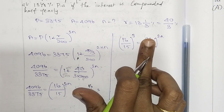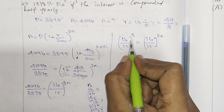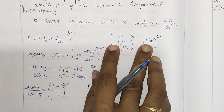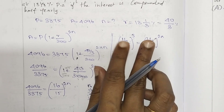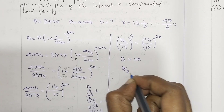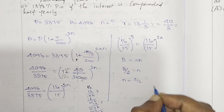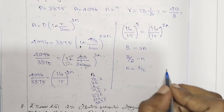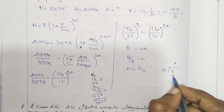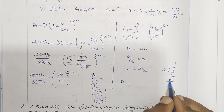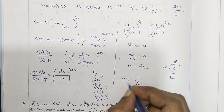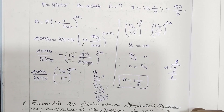Since the base is the same on both sides, the exponents are equal: 2N equals 3, so N equals 3 by 2, which is 1 and 1 by 2 years. Therefore the answer is N equals 1.5 years.